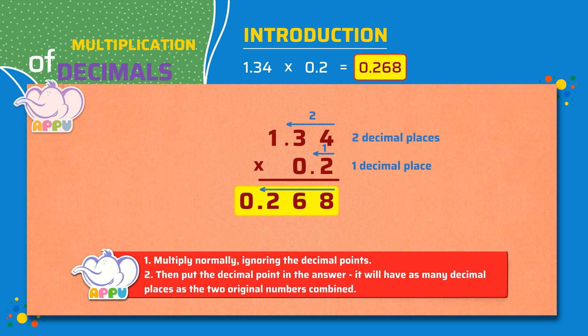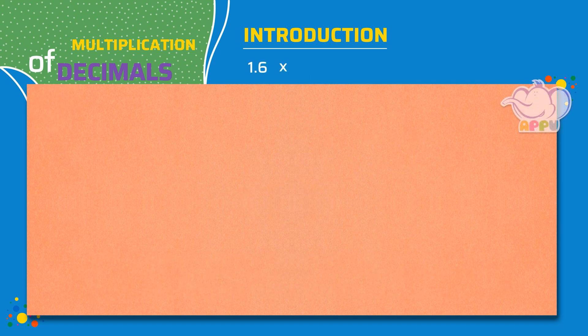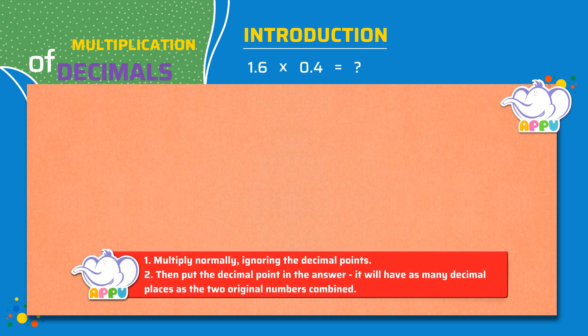Let's see another example. What is 1.6 times 0.4? We multiply the numbers, 16 times 4. Step 1. Multiply 4 with 1's digit. 4 times 6 equals 24. We write 4 and carry over 2. Step 2. Multiply 4 with 10's digit. 4 times 1 equals 4. We add carry over 2. So, 4 plus 2 equals 6. This is 64.